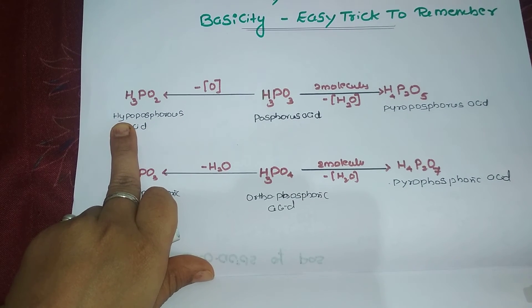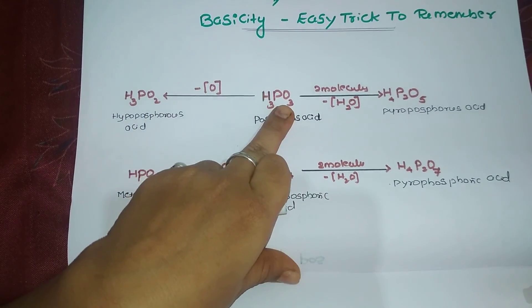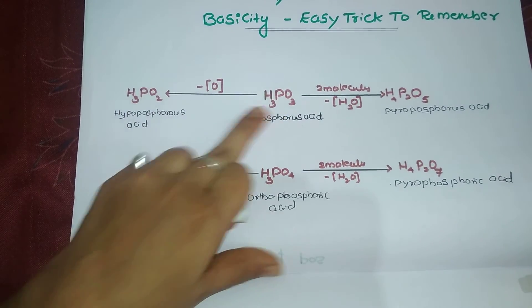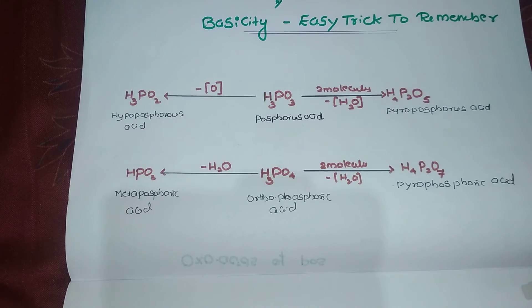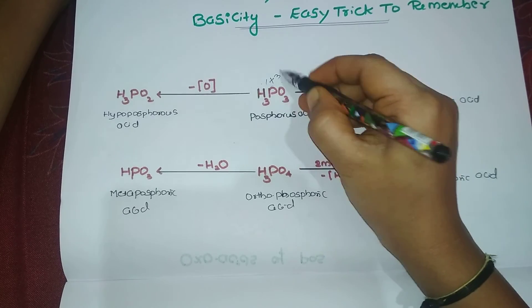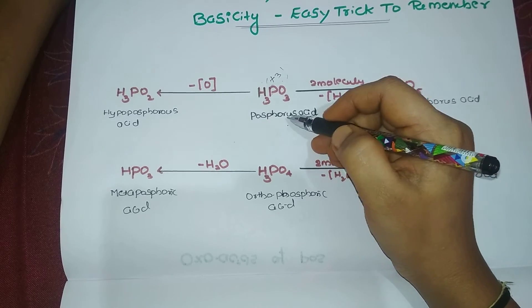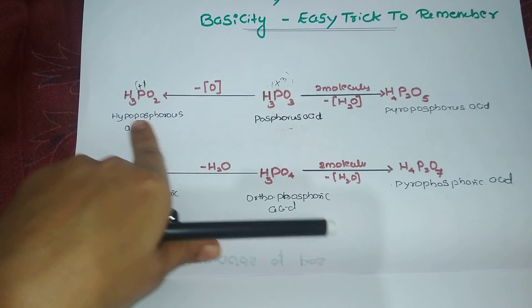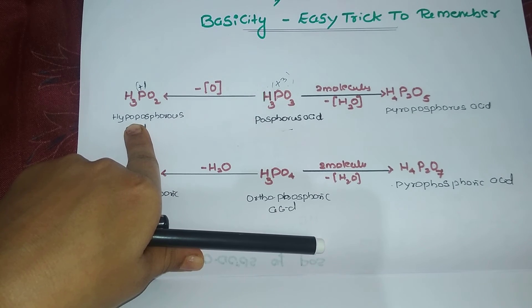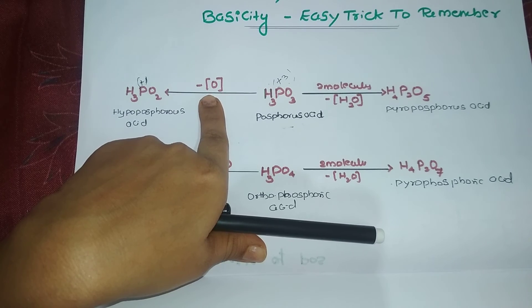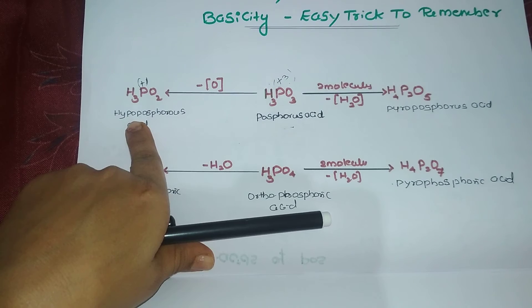The oxidation state of phosphorus in phosphorous acid (H₃PO₃) is +3, whereas in hypophosphorous acid (H₃PO₂) it is +1. The decrease or low oxidation state is represented by the prefix hypo. So removing one oxygen from H₃PO₃ gives H₃PO₂ - that is hypophosphorous acid.